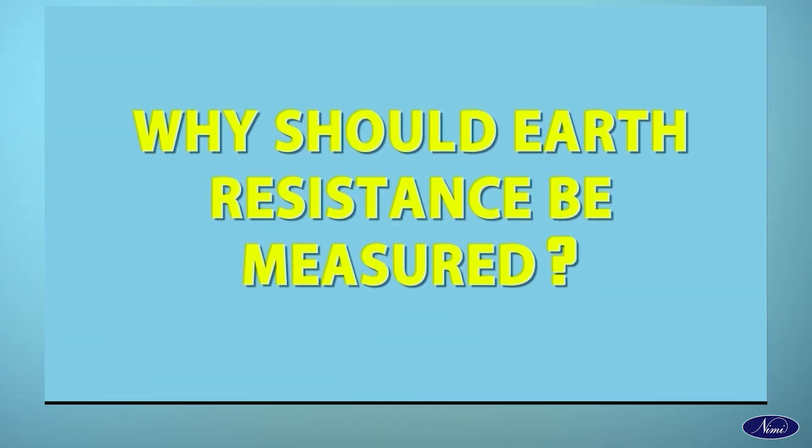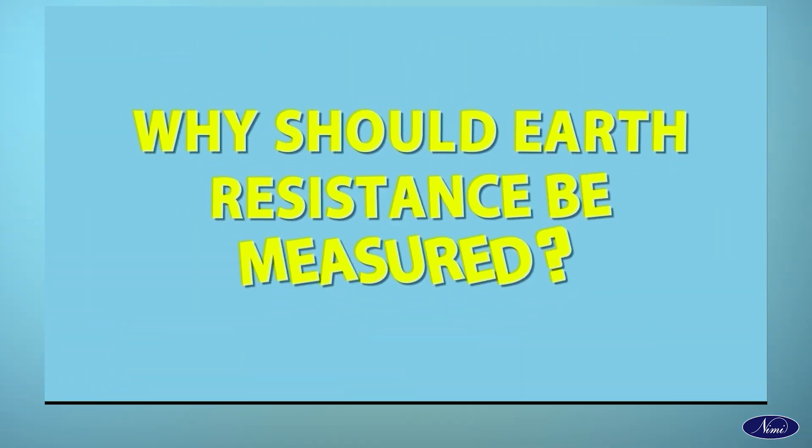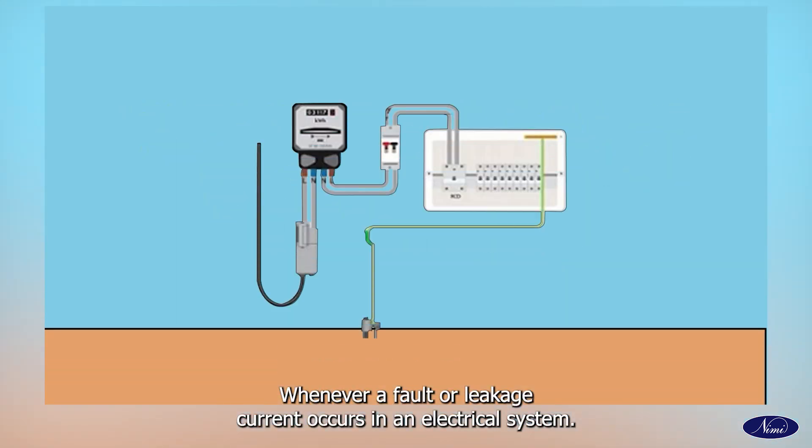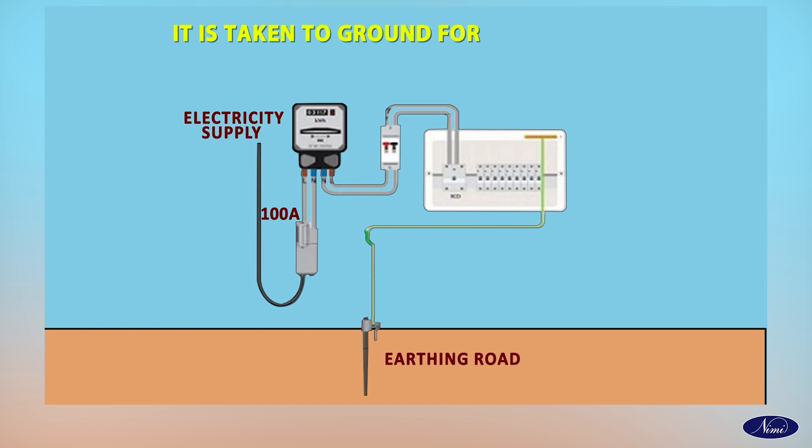Why should Earth Resistance be measured? Whenever a fault or leakage current occurs in an electrical system, it is taken to ground for the protection of humans and other equipment.